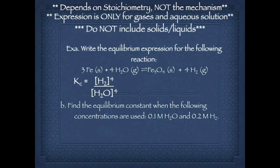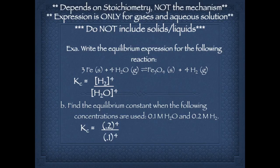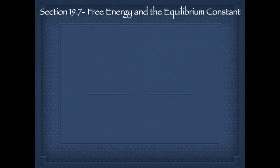Now it asks to find the equilibrium constant given 0.1 M water and 0.2 M hydrogen gas. Kc equals 0.2 raised to the fourth divided by 0.1 raised to the fourth, which gives Kc equal to 16. That's all there is to it.